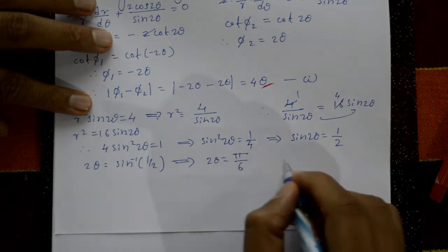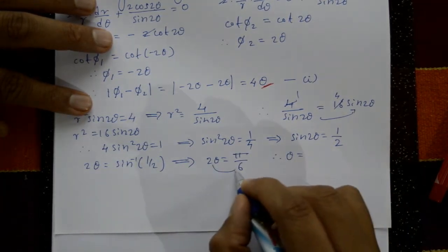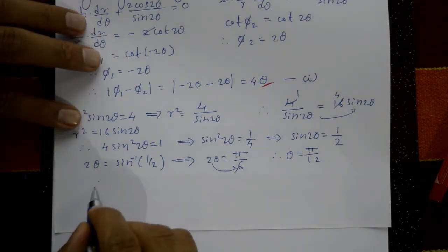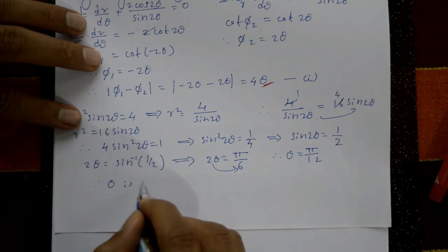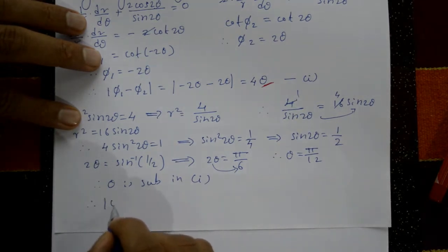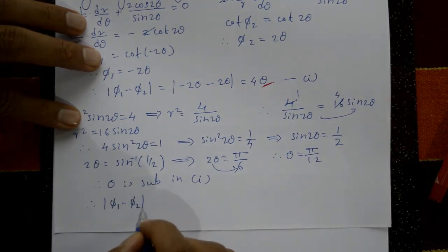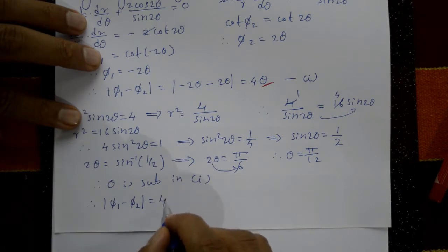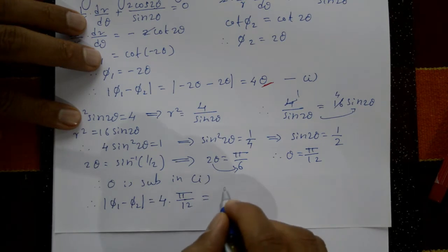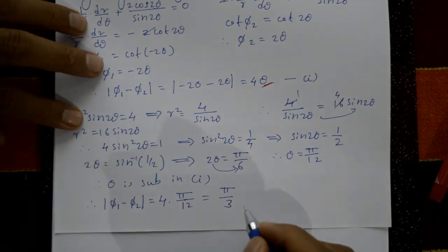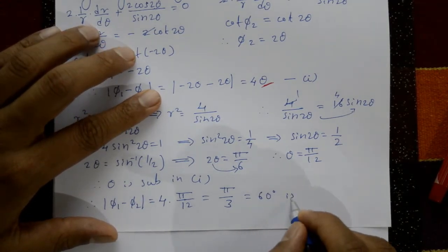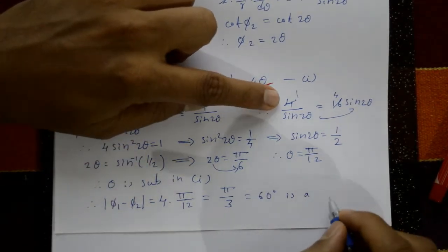Therefore 2θ = π/6, giving θ = π/12. Substituting into equation 1: |φ₁ − φ₂| = 4θ = 4 × π/12 = π/3, which equals 60°. So the angle of intersection is 60°.